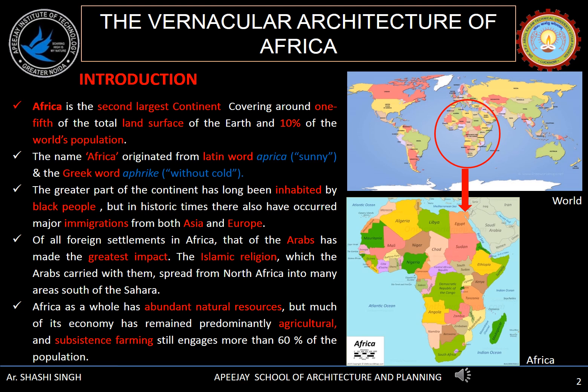which means sunny, and the Greek word 'Afrique', which means without cold. Most of the part is inhabited by black people, but they also had several immigrations from Asia and Europe earlier. Arabs had a major impact, spreading the Islamic religion into many areas of Africa. Africa is rich in natural resources, but the economy is majorly based on agriculture.